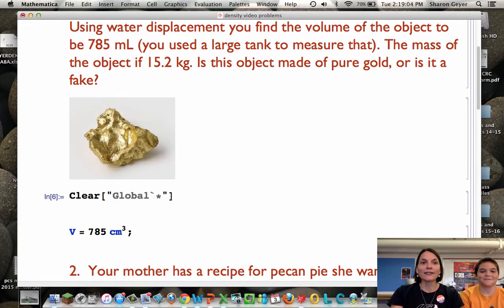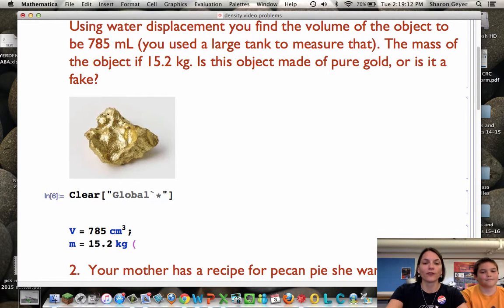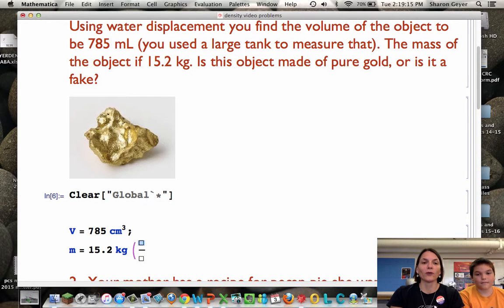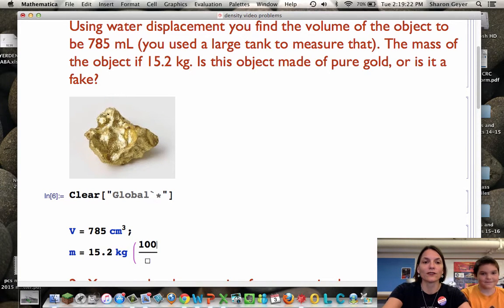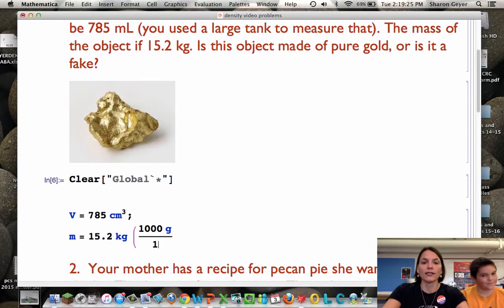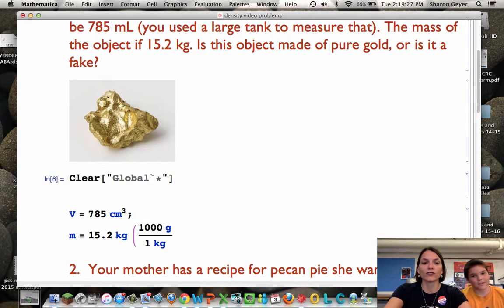And our mass of the object is 15.2 kilograms. I'm going to go ahead and change that to grams. Control question mark to give me a box over box. And I know that the conversion from grams to kilograms is 1,000. So for every 1,000 grams, I have one kilogram. So if I set this conversion factor up like this, I can very easily change from kilograms to grams. I'm going to put a semicolon at the end. We don't really have to calculate it because Mathematica will do that calculation for us when we solve for density.